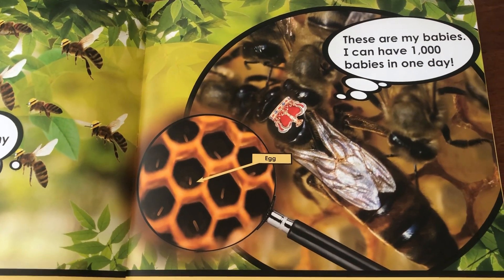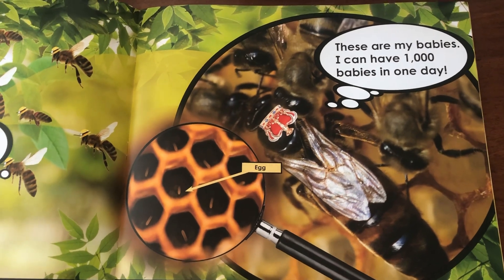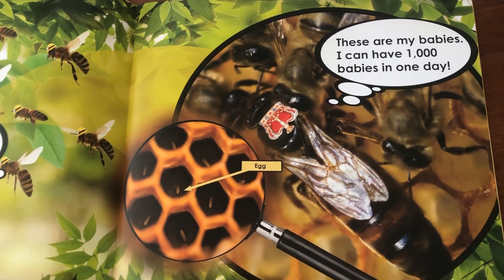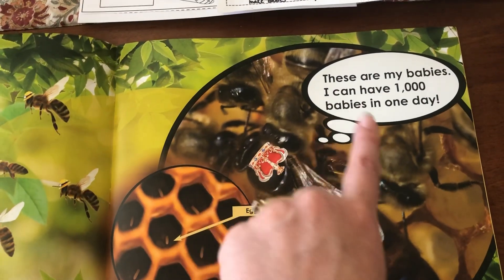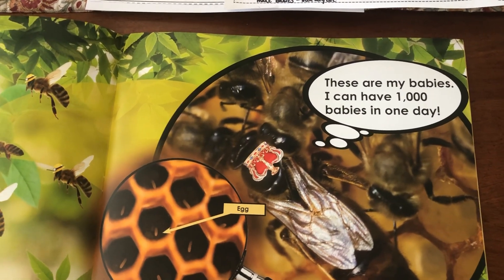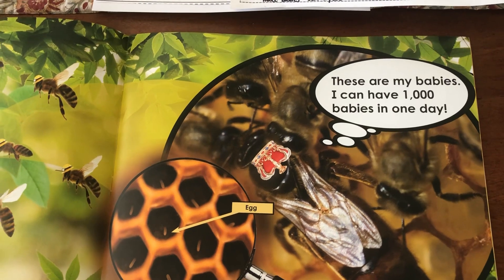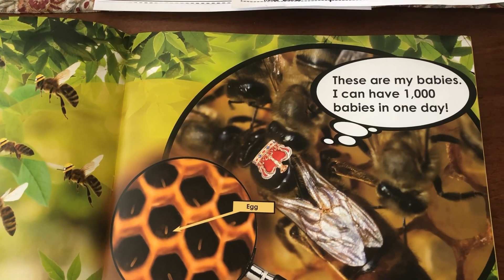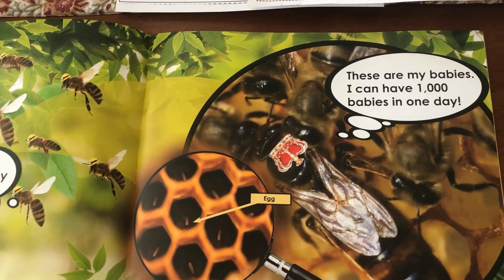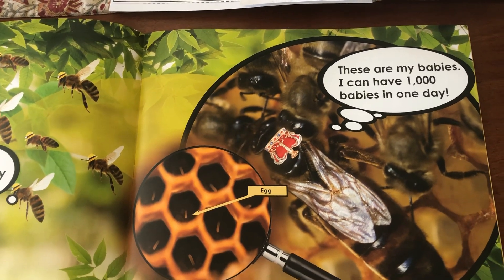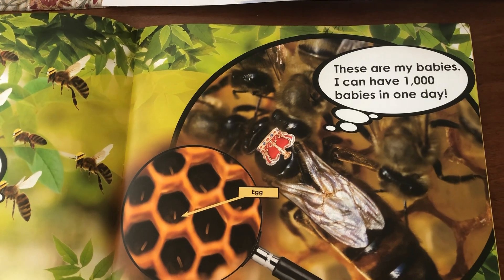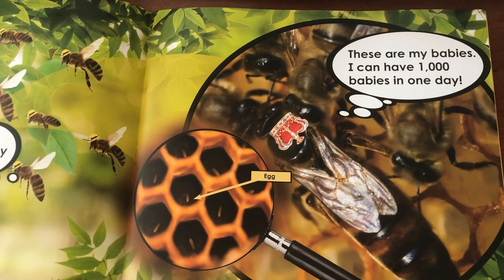It's just to show you that the bee that has the babies is called the queen. She's got a thought bubble that says, "These are my babies. I can have 1,000 babies in one day." Oh my goodness — that is a big number. A lot of babies. 1,000.